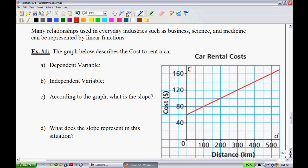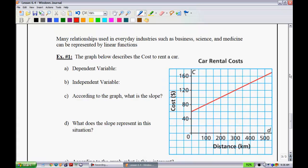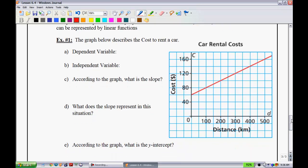The last one I have for you is a word problem. It says many relationships used in everyday industries such as business, science, and medicine can be represented by linear functions. So the graph below describes the cost to rent a car. They first want you to figure out the dependent and independent variable. So your dependent variable is always going to be on this axis. In this circumstance, it is cost, represented in terms of dollars. My independent variable is always going to be down here. It is distance, and in this circumstance, it is represented in terms of kilometers.